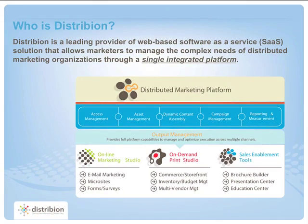So let's take a moment now to talk briefly about Distribion and how we help solve these problems and make the connection. Distribion is a leading provider of web-based software as a service that allows marketers to manage the complex needs of distributed marketing organizations through a single integrated platform. Within this platform, we have a capabilities layer that consists of access management, asset management, dynamic content assembly, campaign management, reporting, and measurement.